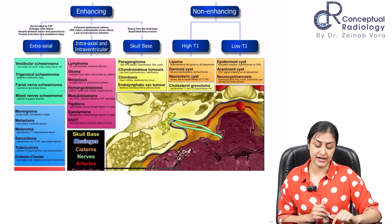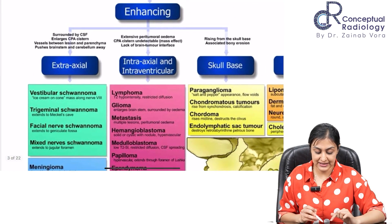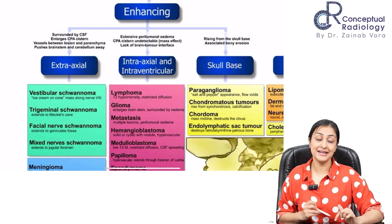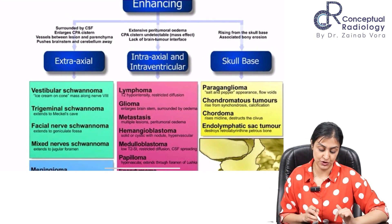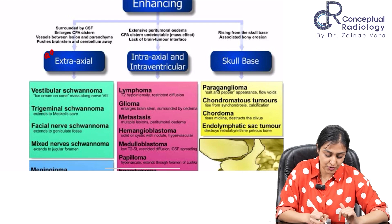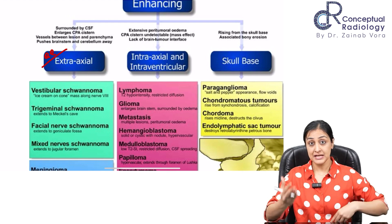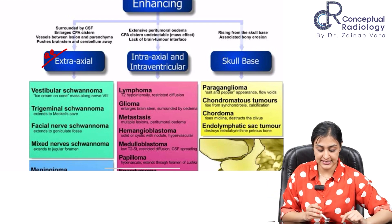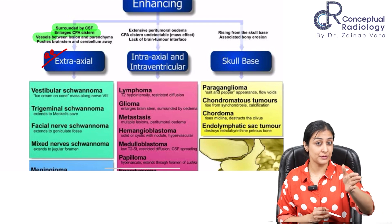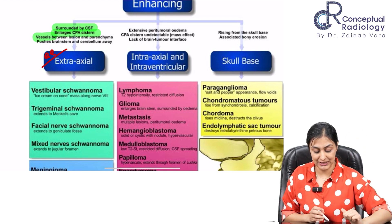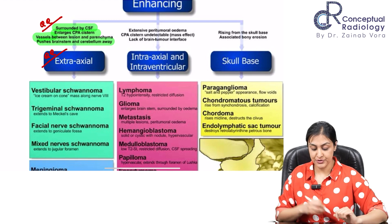From an AJR article, our approach starts with enhancing versus non-enhancing. For enhancing lesions, find the epicenter — is it extra-axial, intra-axial, or from the skull base? The most common primary CP angle tumors are extra-axial. Features of extra-axial apply: the lesion will be surrounded by CSF, showing a CSF cleft, enlargement of the CP angle cistern, and a vascular cleft, with mass effect on brainstem and cerebellum.